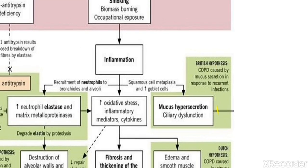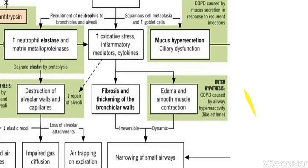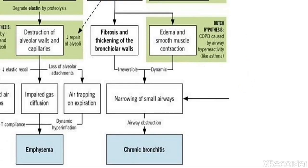Chronic bronchitis mainly happens due to smoking, biomass burning exposure, and noxious pollutants. Inflammation leads to increased oxidative stress, inflammatory mediators, and cytokines, causing mucous hypersecretion. Goblet cells increase, and squamous cell metaplasia occurs. The normal respiratory epithelium has ciliary movement that expels noxious stimuli. With mucous hypersecretion there is ciliary dysfunction, increasing chances of secondary infection. Increased oxidative stress and inflammatory mediators lead to fibrosis, thickening of the bronchial wall, edema, and smooth muscle contraction, causing irreversible narrowing of small airways and airway obstruction — resulting in chronic bronchitis.